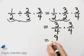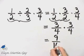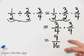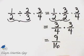Three times three is nine, over four times four is sixteen. So my answer, when this expression is evaluated, is nine-sixteenths.